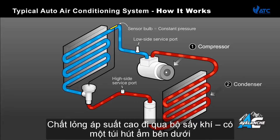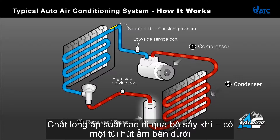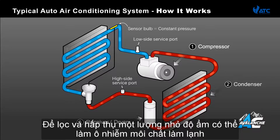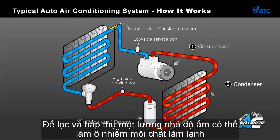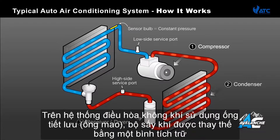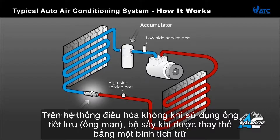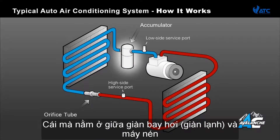The high pressure liquid flows through the receiver dryer, which has a desiccant bag inside it to filter and absorb small amounts of moisture that may contaminate the refrigerant. On AC systems using an orifice tube, the receiver dryer is replaced with an accumulator, which is located between the evaporator and compressor.